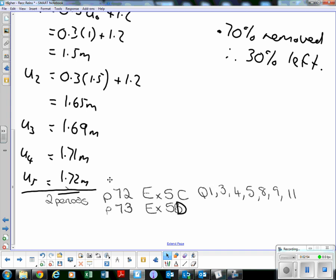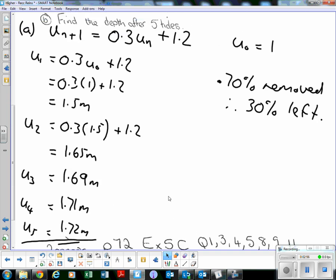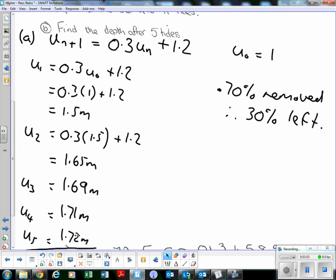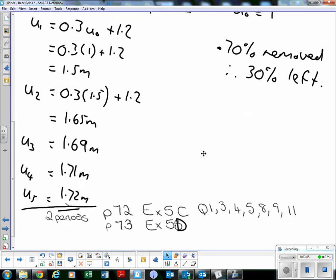Now if we look at these values, we're going from 1.5 to 1.65, 1.69, 1.71, 1.72. It looks as though those values are getting smaller and smaller, as if it's moving towards a certain value, a certain depth of silt in the harbor. We'll learn about that in lesson number three.